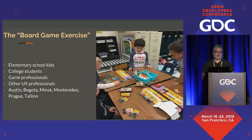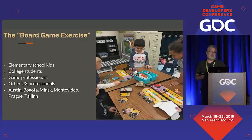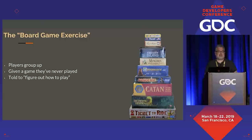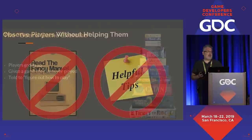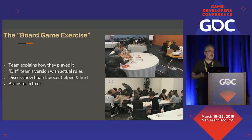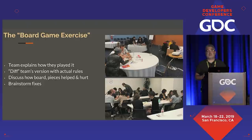The board game exercise I'm going to talk about today is something I've run on all sorts of different groups — elementary school kids, college students, game industry professionals, other UX professionals — in cities all over the world. The basic exercise: players group up, I give them a game they've never played before, and tell them to go figure out how to play in 20 or 30 minutes. I observe players without helping them — no manual, and they can ask me questions but I won't answer. After 20 or 30 minutes, when I see all teams have some sort of game going, we break it down. The team explains what they came up with, we diff their version with the actual rule set, and discuss how the board and pieces helped or hurt their learning, where it steered them right and where it steered them wrong. Then we brainstorm fixes together.